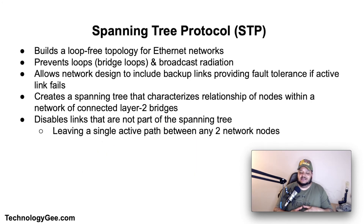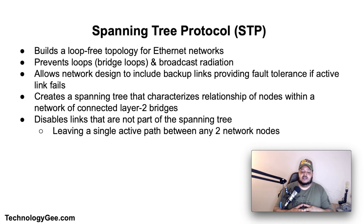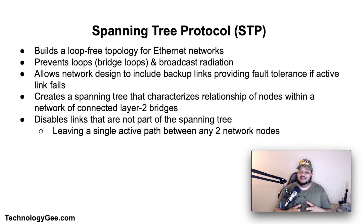The spanning tree protocol is a network protocol that builds a loop-free logical topology for ethernet networks. The basic function of STP is to prevent switching loops or bridge loops and the broadcast radiation that results from them. Spanning tree also allows a network designed to include backup links, providing fault tolerance if an active link fails. STP creates a spanning tree that characterizes the relationship of nodes within a network of connected layer 2 bridges and disables those links that are not part of the spanning tree, leaving a single active path between any two network nodes.